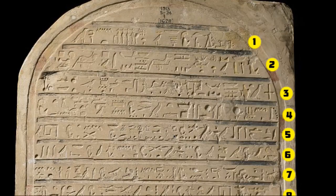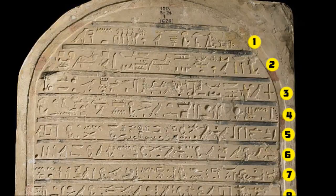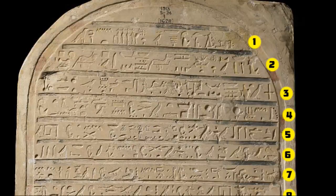Let me explain something about the transliteration system used in the Vygus dictionary. It uses the Manuel de Codage transliteration system — a case-sensitive system developed for electronic and digital media to avoid the need for special diacritic mark keyboards. Upper and lower case represent specific glyphs. It's recommended to search by transliteration first, rather than the Gardiner string.